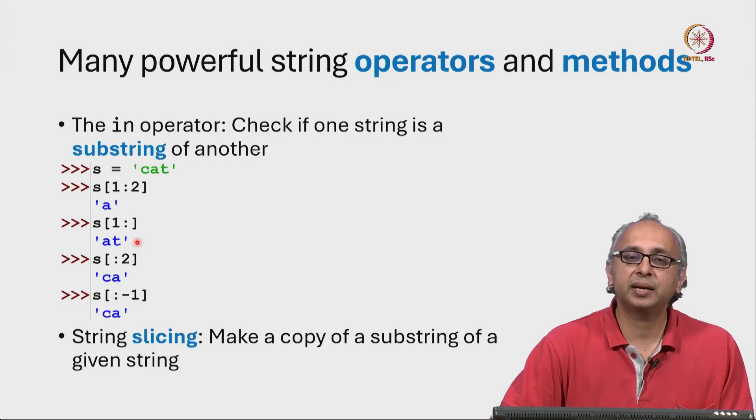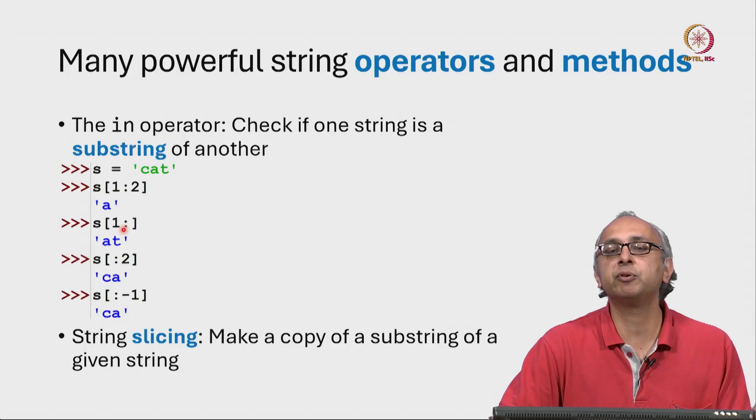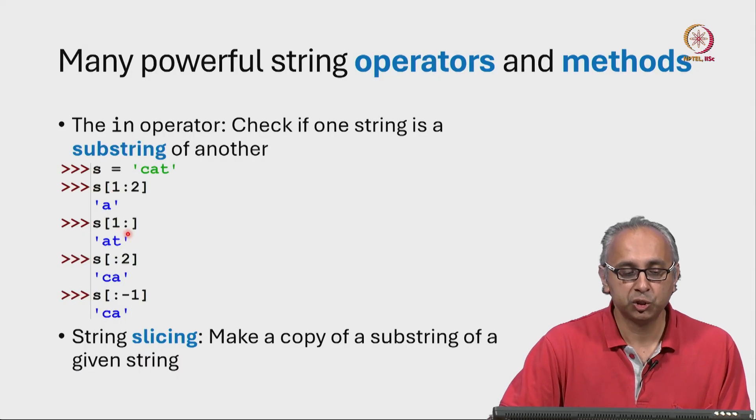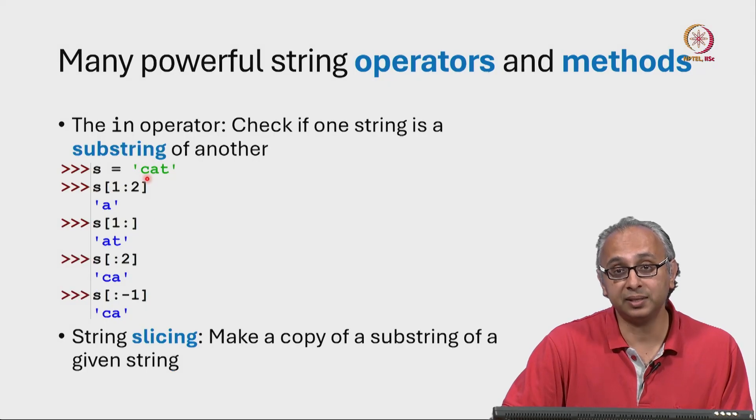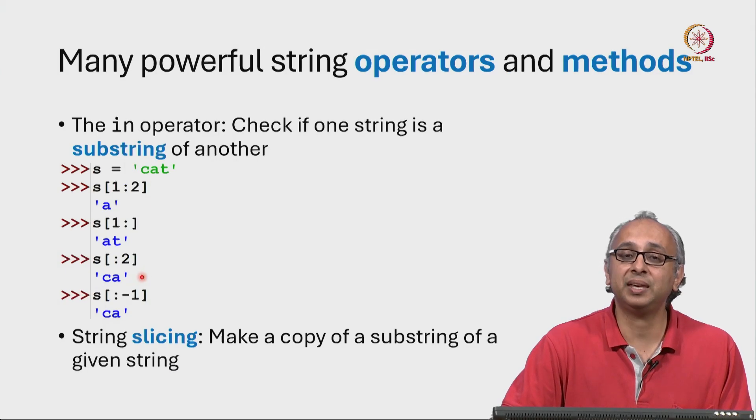Similarly, I can drop the number before the colon if I want to start from the beginning of the string. So if I say what is the slice of the string starting at the beginning up to but not including index 2? Well, that would just be C at index 0 and A at index 1 but not including the T at index 2. So that would just be CA.